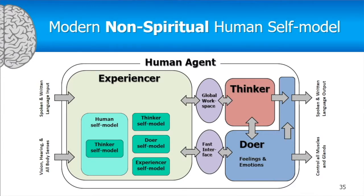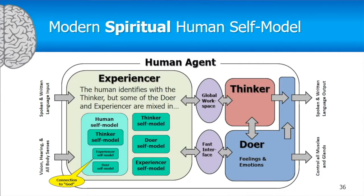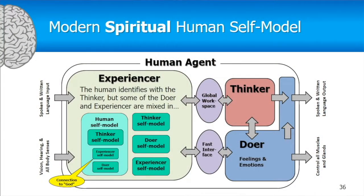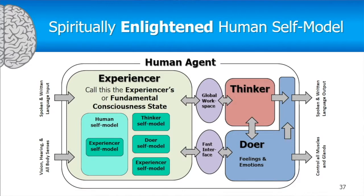A spiritual modern human has a self-model less than the thinker's — they become aware of the doer and the experiencer, which are the bigger part of us. The doer and experiencer do most of the work of living in the world, though the thinker takes all the credit. A spiritually enlightened modern human would have their human self-model equal to the experiencer self-model — what we can call 'experiencer consciousness.'